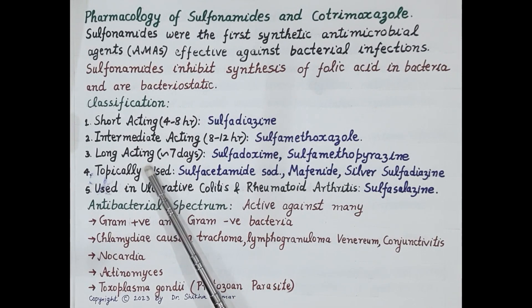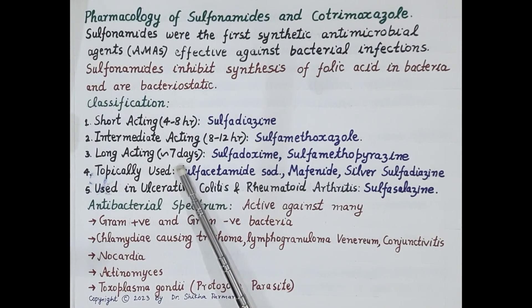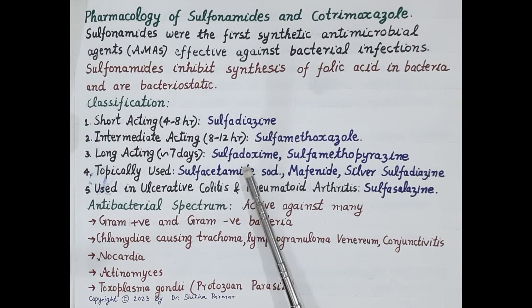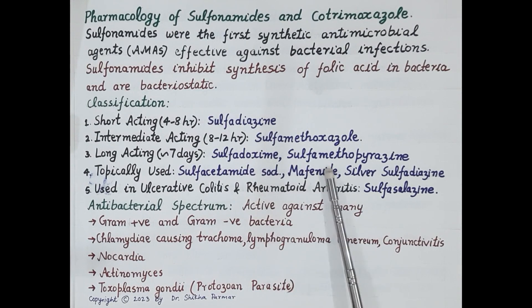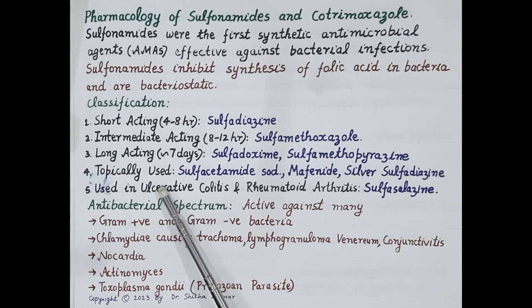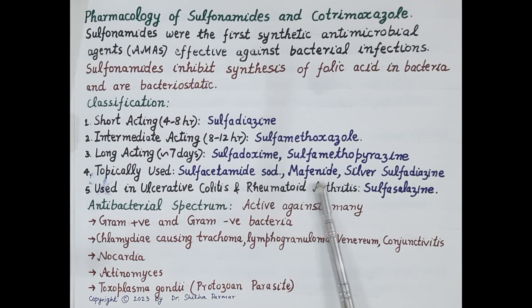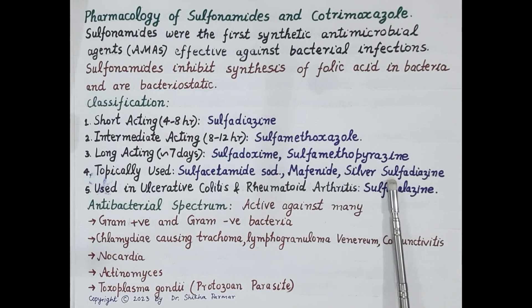Then long-acting sulfonamides with a half-life of around 7 days — for example, sulfadoxine and sulfametopirazine. Topically used sulfonamides include sulfacetamide sodium and mafenide, and silver sulfadiazine.